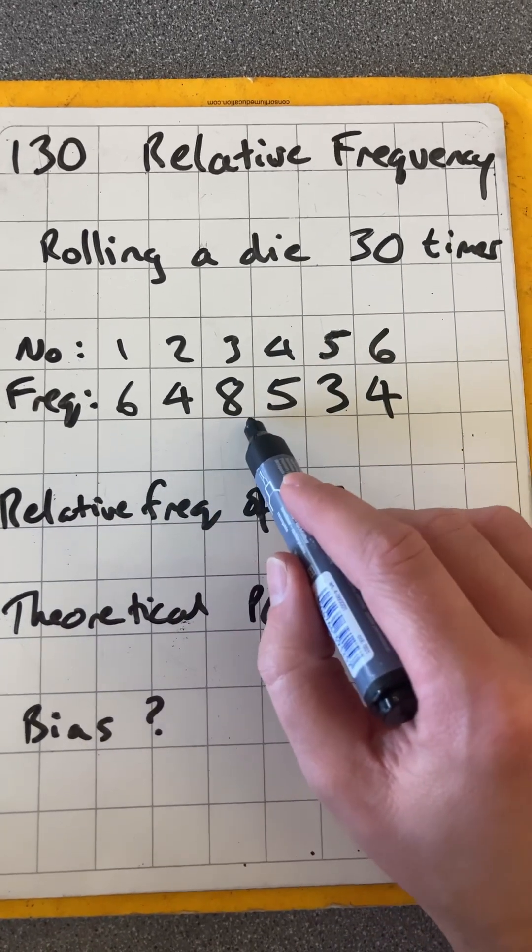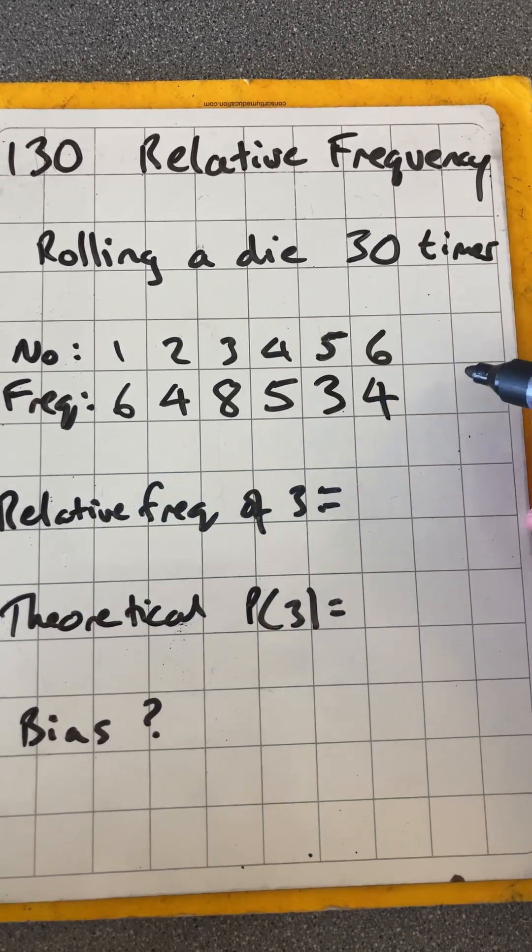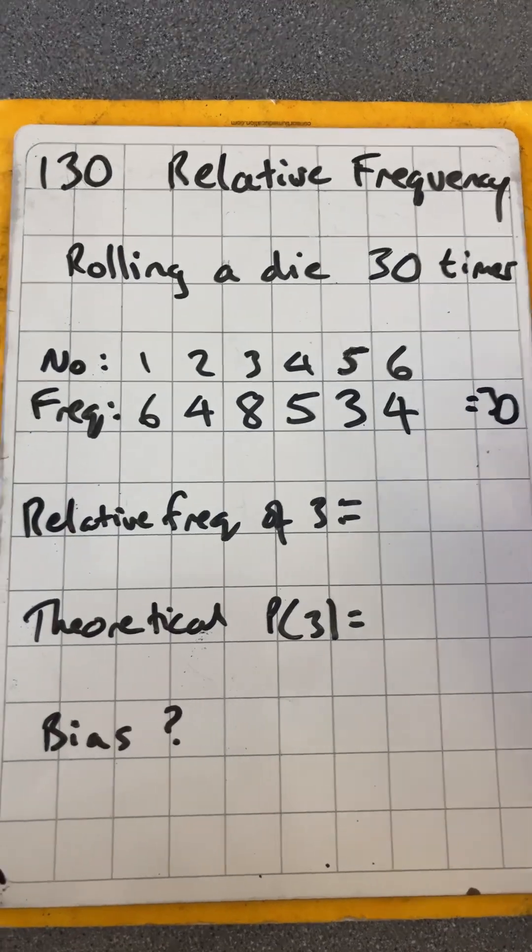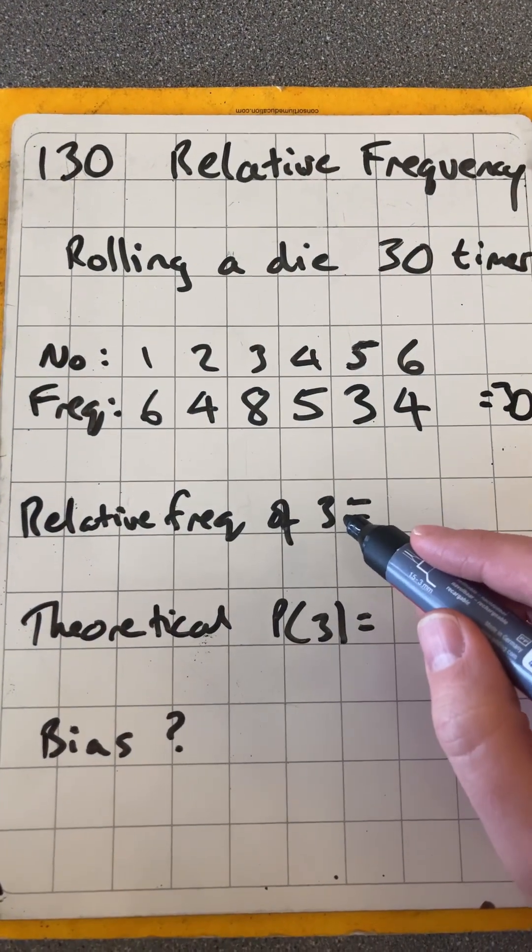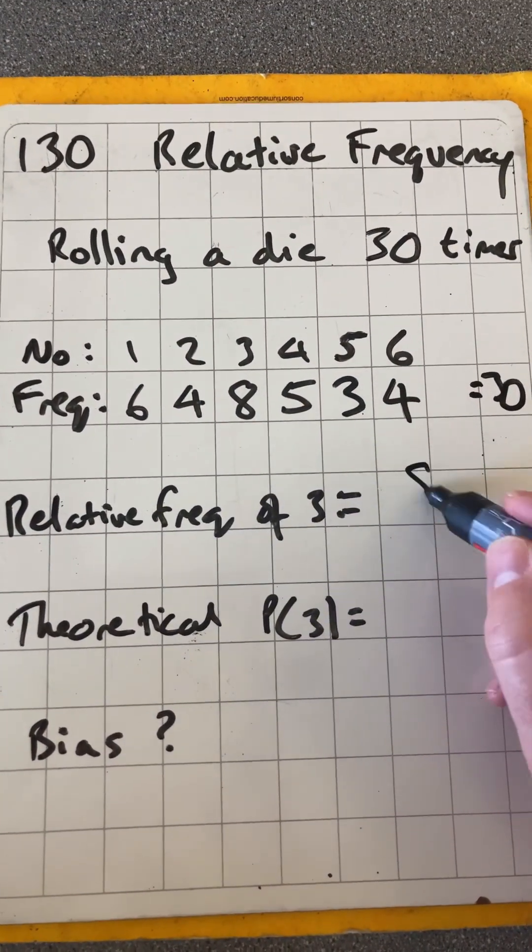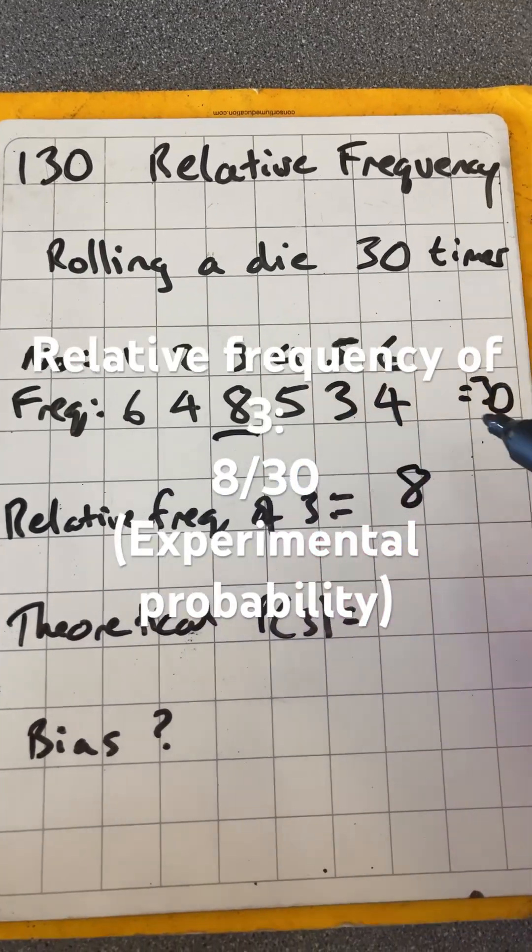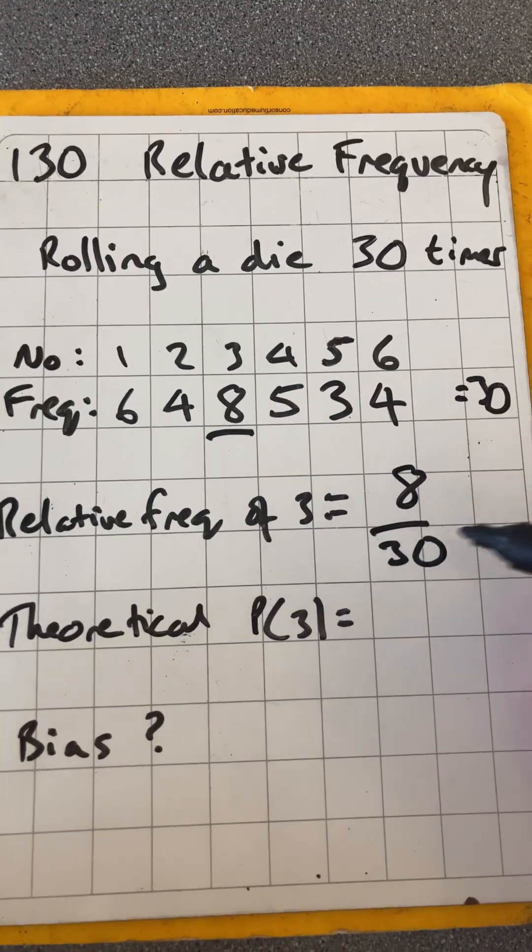So to check that adds up to 10, 18, 26, that's all 30. So let's work out the relative frequency of landing on a 3. It's 8, that 8 there, out of the total 30.